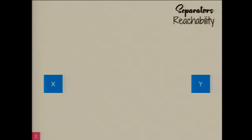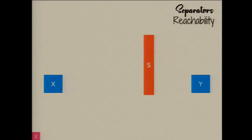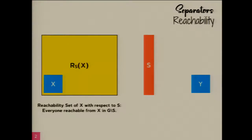Let me now talk about separators, which is going to be our main choice of hammer for this problem. We have two typically disjoint subsets of vertices X and Y. An X-Y separator is simply a subset of vertices which, when deleted from the graph, leaves you in a situation where you can't get from X to Y. There is no path in G minus S from any vertex in X to any vertex in Y. We use this notation to refer to everything you can reach from X once S is gone — the reachability set of X with respect to the separator S.